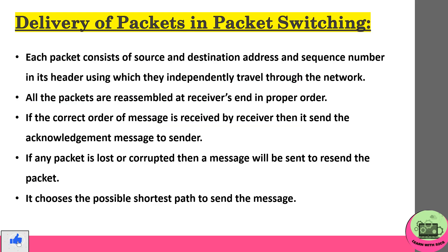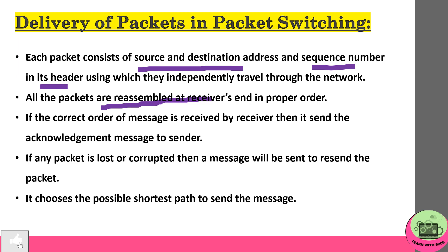Each packet consists of source and destination address and a sequence number in its header, using which packets independently travel through the network. These packets are reassembled at the receiver's end in proper order. If the correct order of the message is received by the receiver, an acknowledgement message is sent to the sender. If any packet is lost or corrupted, a message is sent to resend the packet. It chooses the possible shortest path to send the message.